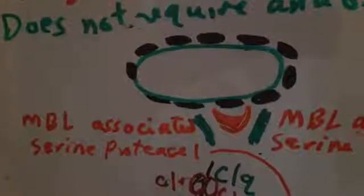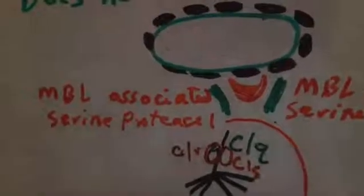MBL is composed of the mannose binding lectin that binds to pathogen-associated molecular patterns. It is associated or complexed by two molecules of enzymatic activity, and these are MBL-associated serine protease 1 and MBL-associated serine protease 2.